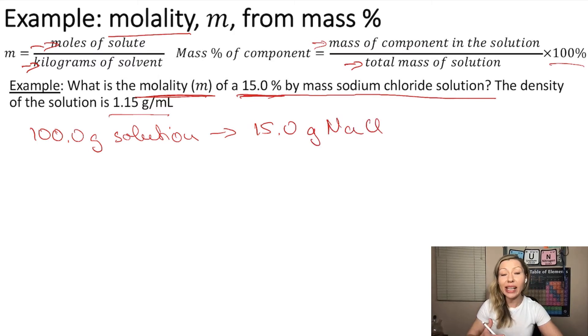And the rest is actually going to be the solvent. So 100 minus 15, that is going to be 85.0 grams of solvent.